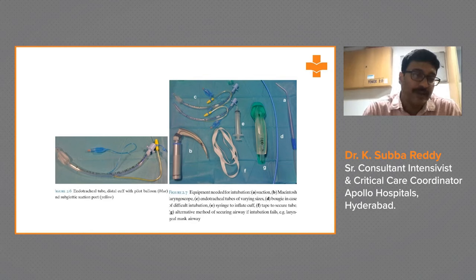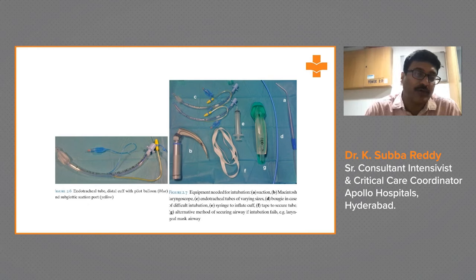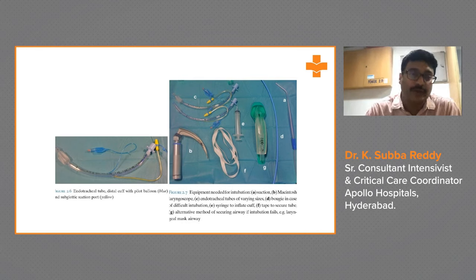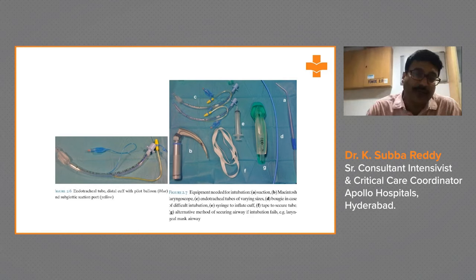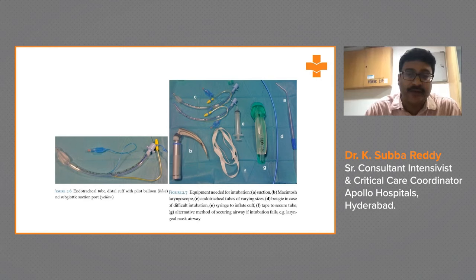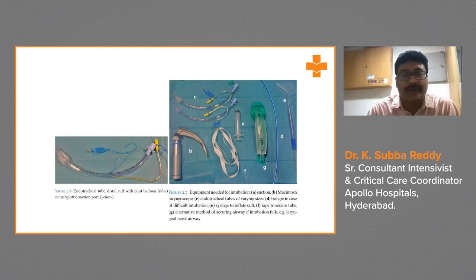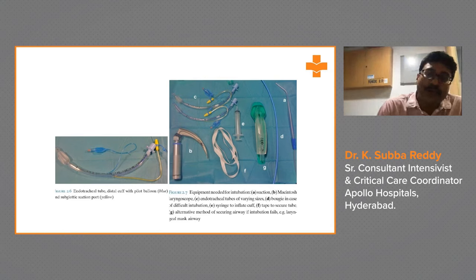The endotracheal tube has a distal cuff, a pilot balloon, and the latest version also has a subglottic suction port, which can be used for suctioning subglottic secretions. The equipment needed for intubation includes: a working suction machine, a Macintosh laryngoscope, endotracheal tubes, a syringe to inflate the cuff, tape to secure the tube, and an alternative method of securing the airway — which is the laryngeal mask airway — if intubation fails.